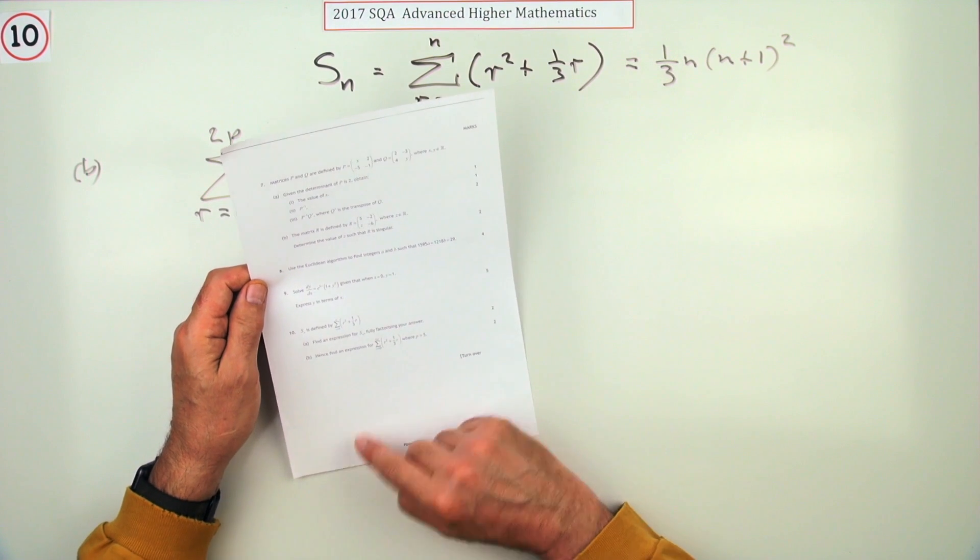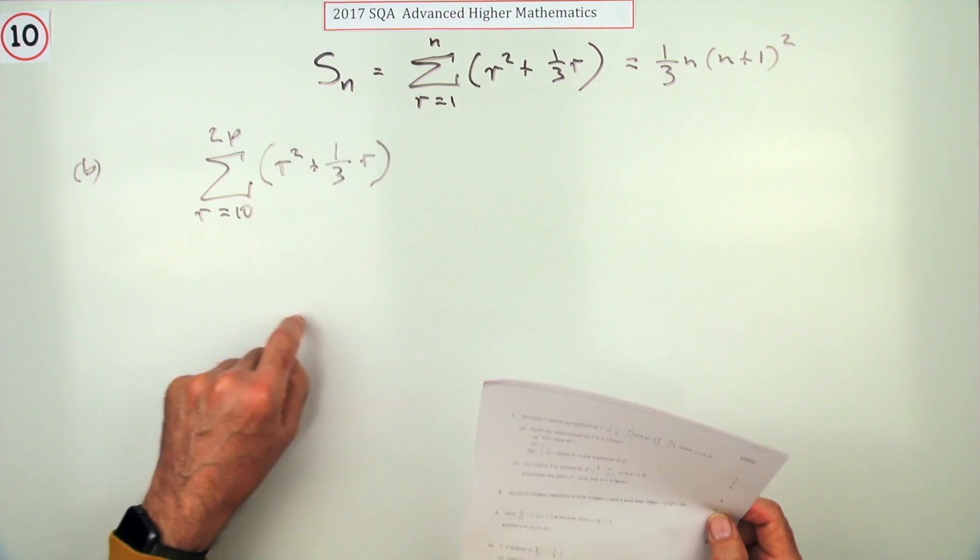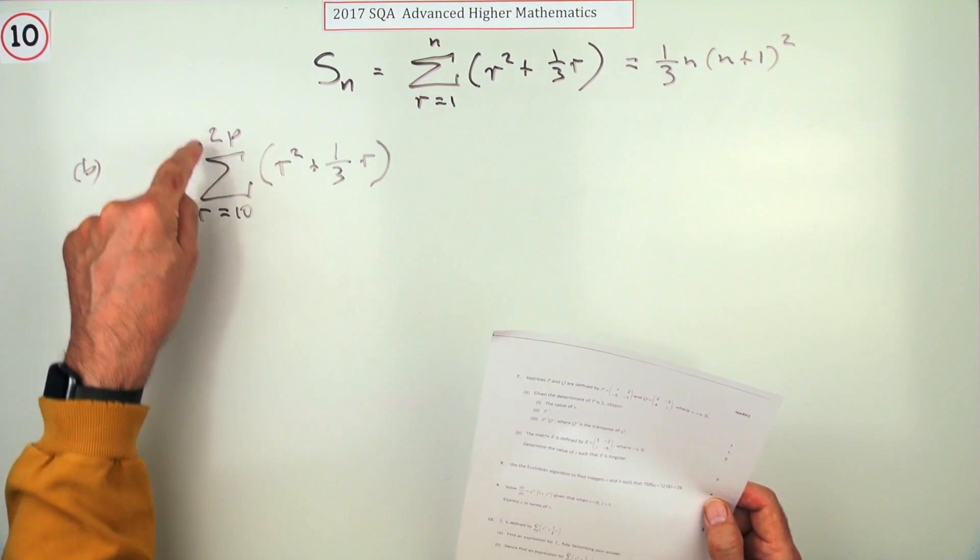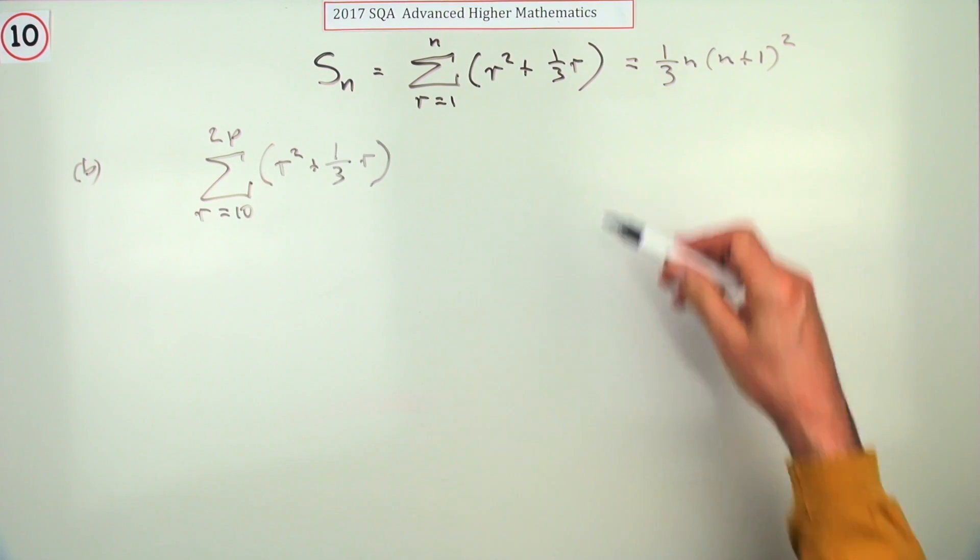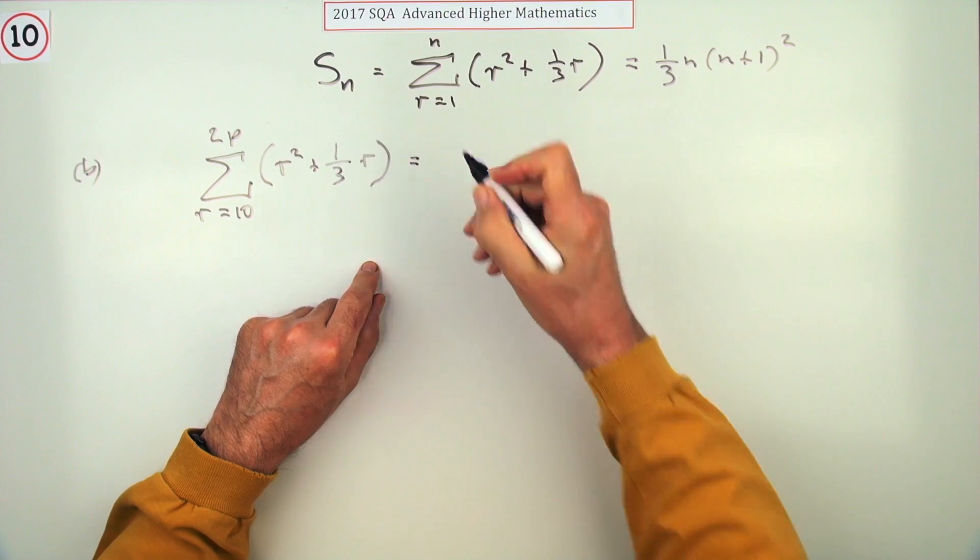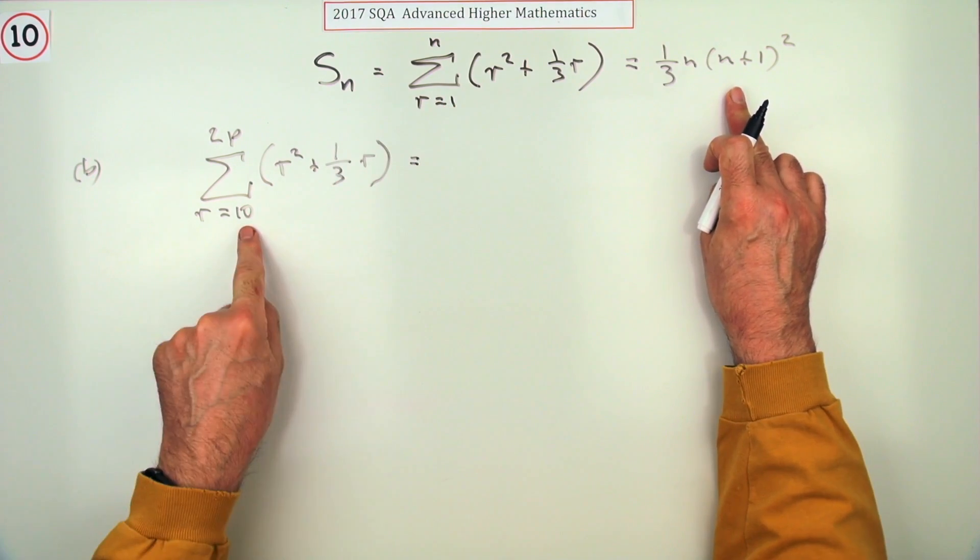Part b, for two marks, find an expression for this: the sum from 10 to 2p of the one you've just found. Two marks, I hope it's worth it.